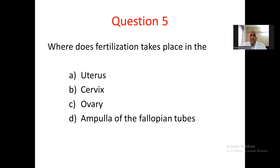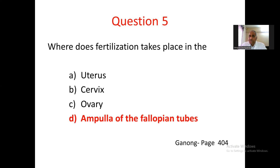Question number 5. Where does fertilization take place? A. uterus, B. cervix, C. ovary, D. ampulla of the fallopian tubes. Fertilization takes place in the ampulla of the fallopian tubes — not in the uterus, not in the cervix, not in the ovary. The spermatozoa pass through these structures and reach the fallopian tubes, and the ovum reaches that site because of the effects of oxytocin and other uterine stimulants. The ampulla of the fallopian tubes is the correct response.